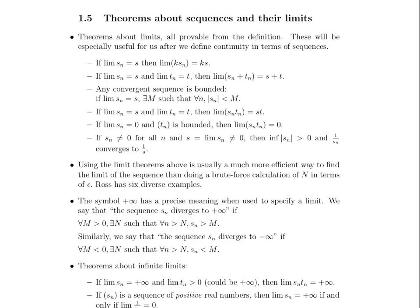If the limit of a particular sequence is zero and the sequence tₙ is bounded, then the limit of sₙtₙ — where we take the nth term of this sequence times the nth term of that sequence to find the nth term of the product sequence — that limit is going to be 0 as well.